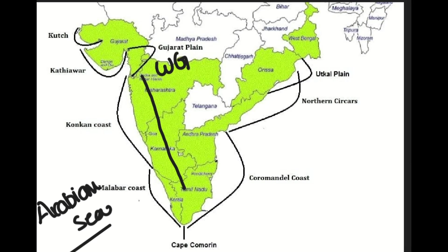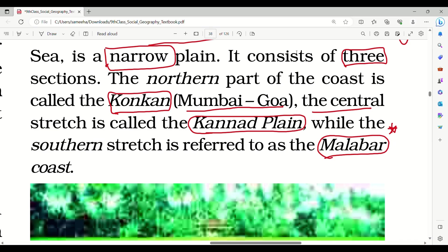On the map of the western coastal plains, the northern part is one region, along the central part is the Kannad Plain, and the southern part is the Malabar Coast.